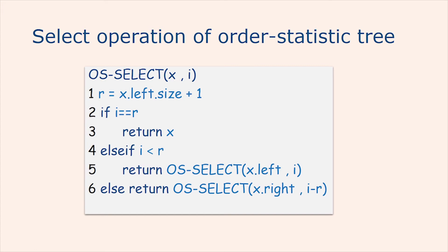If i is greater than r, then the ith smallest element resides in x's right subtree. Since the subtree rooted at x contains r elements that come before x's right subtree in an inorder tree walk, the ith smallest element in the subtree rooted at x is the (i - r)th smallest element in the subtree rooted at x.right. Line 6 determines this element recursively.